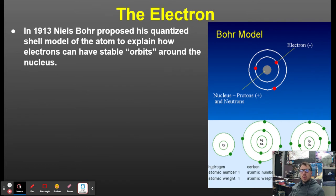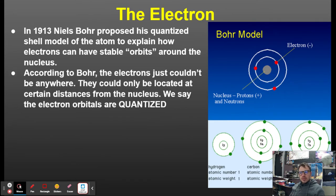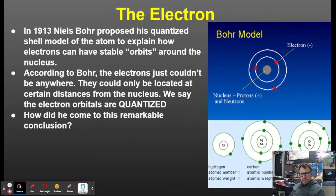That's when in 1913, Niels Bohr proposed his quantized shell model of the atom to explain how electrons have stable orbits — in parentheses, because electrons don't really orbit the nucleus. According to Bohr, the electrons couldn't be anywhere; they could only be located at certain distances from the nucleus. We say the electron orbitals are quantized.